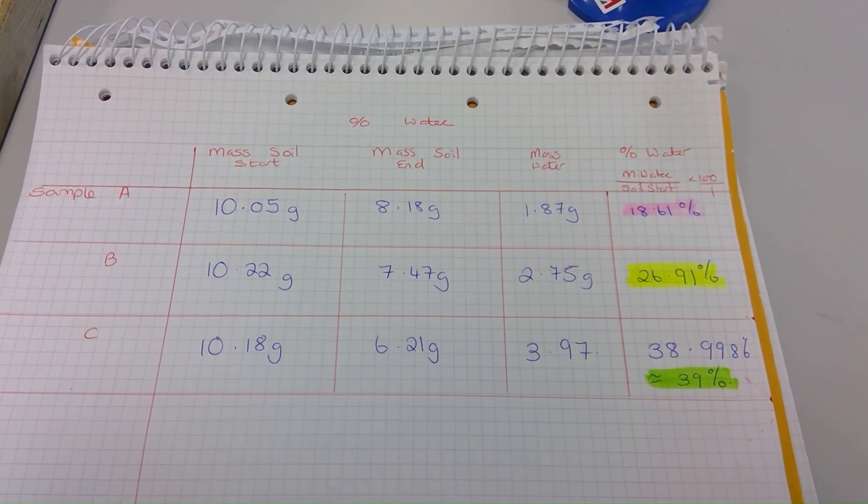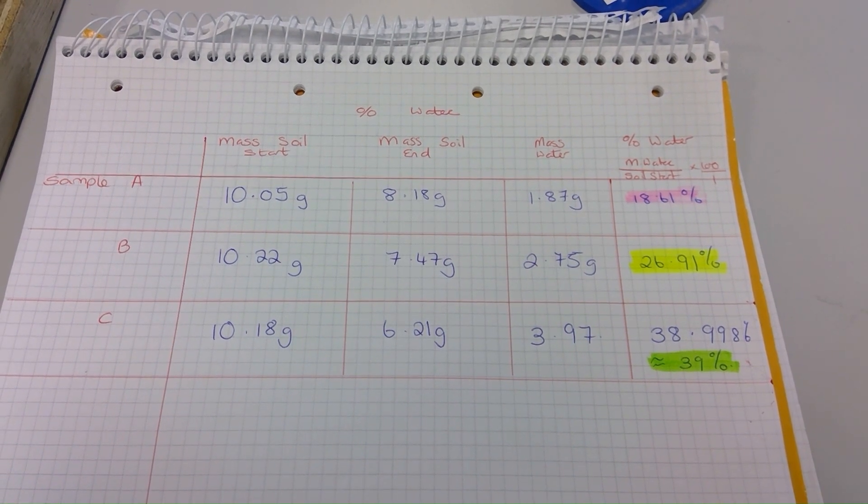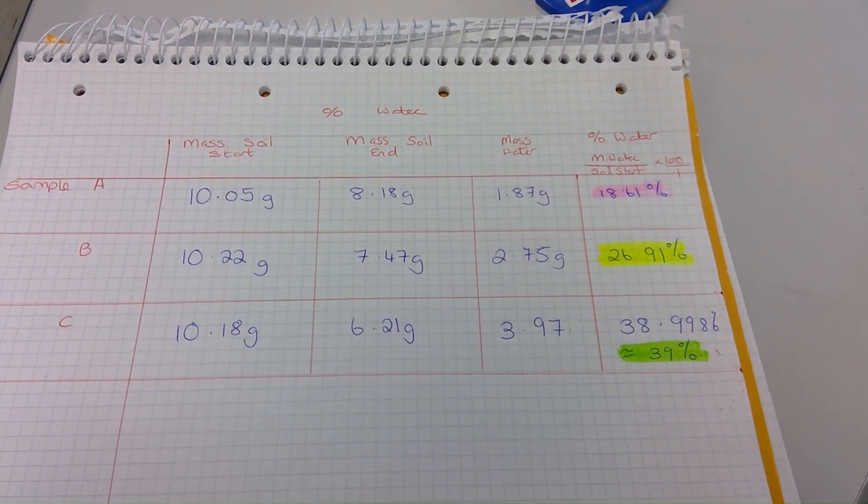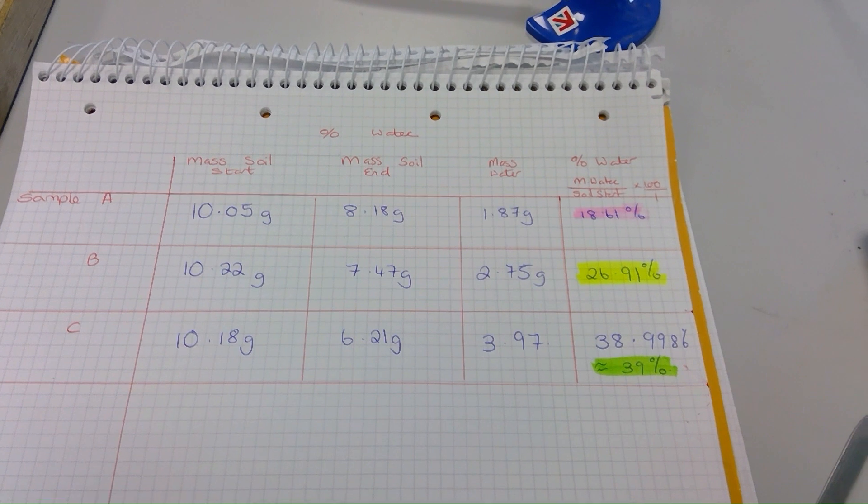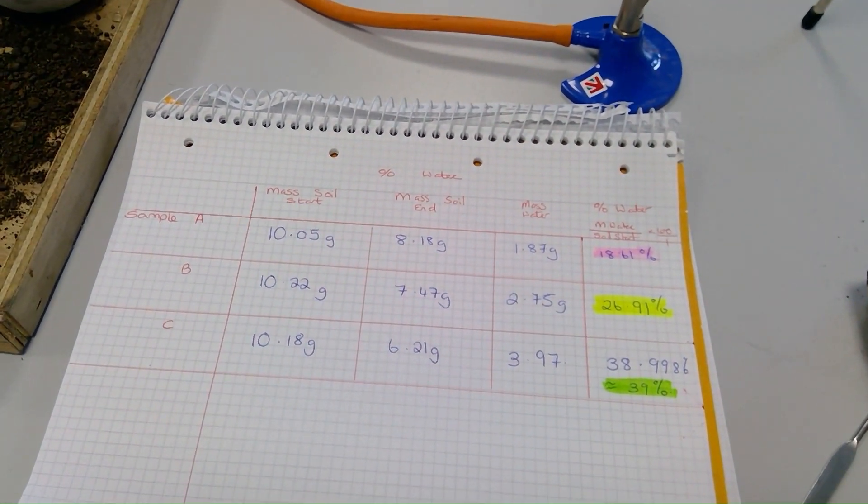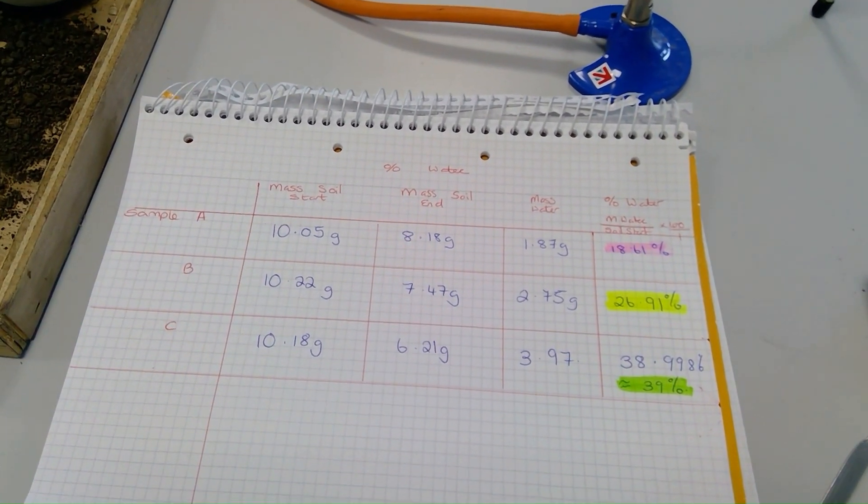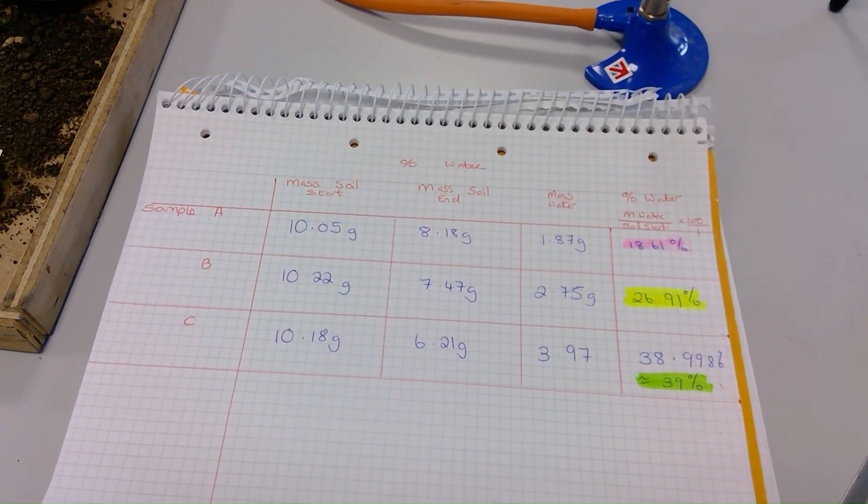And C, which had farm yard manure, no synthetics, and was being grazed in a strip grazing manner, had a water retention of 39%, even though they felt like they were dry before they went into the oven. So that just goes to show, again furthers my theory that the darker color soil has a higher organic matter content.